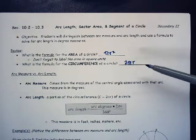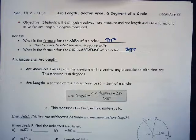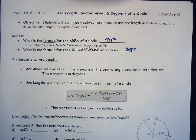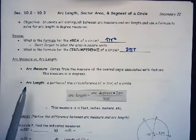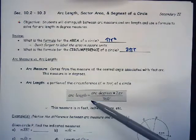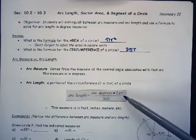Arc measure comes from the measure of the central angle associated with that arc, and this measure is in degrees. Arc length is a portion of the circumference 2 pi r of a circle, measured in feet, inches, or meters. The arc measure is in degrees, and the arc length is in feet, inches, or meters — they are different. The way we find the arc length is we take the arc degrees, multiply by 2 pi r, and divide by 360.